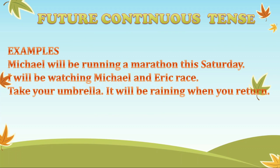Here are some examples of future continuous tense. 'Michael will be running a marathon this Saturday' — Michael is the subject, will be comes before the verb, and running is the ing form. 'I will be watching Michael.' 'Take your umbrella — it will be raining when you return.' In all these sentences, will be comes before the verb which is in the ing form.